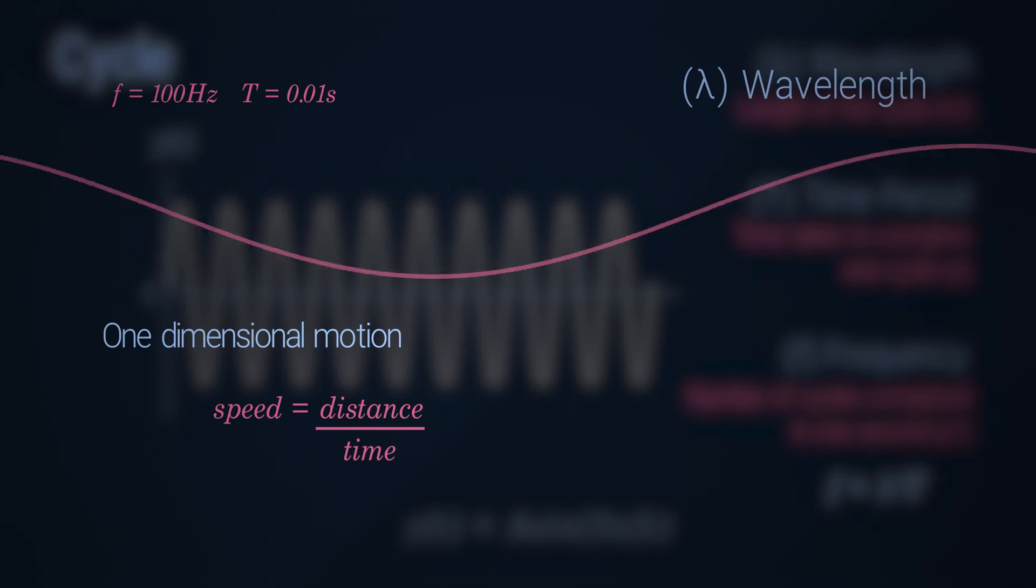The time taken for a single cycle T is 0.01 seconds, and the speed of sound in air is well established to be 343 meters per second. So we get the wavelength of a 100Hz wave to be approximately 3.4 meters, just to give you a perspective.